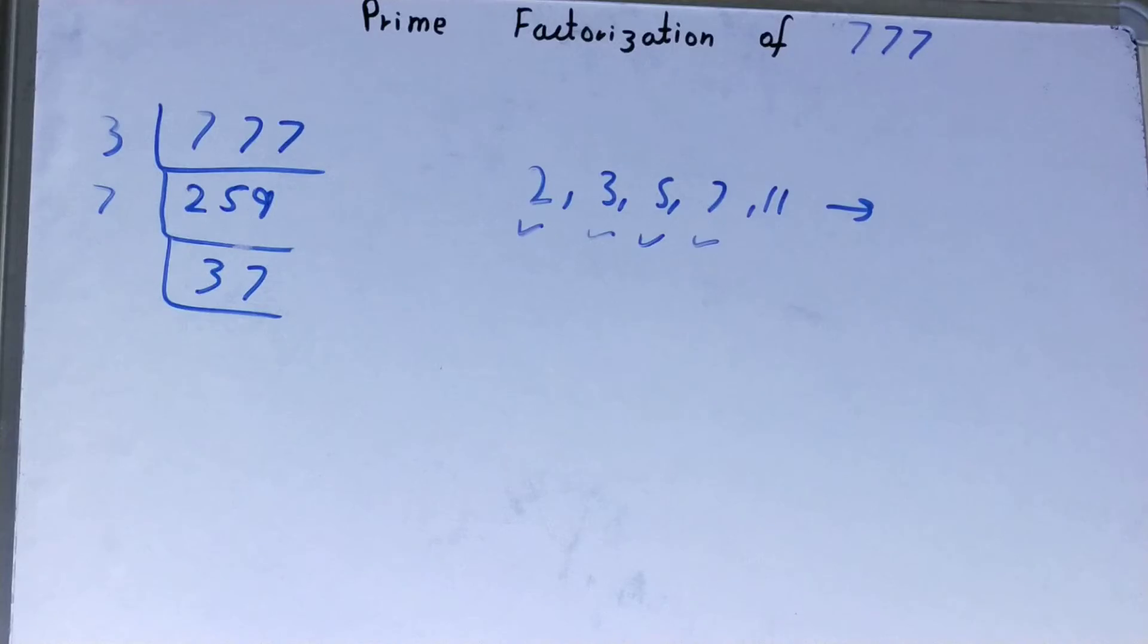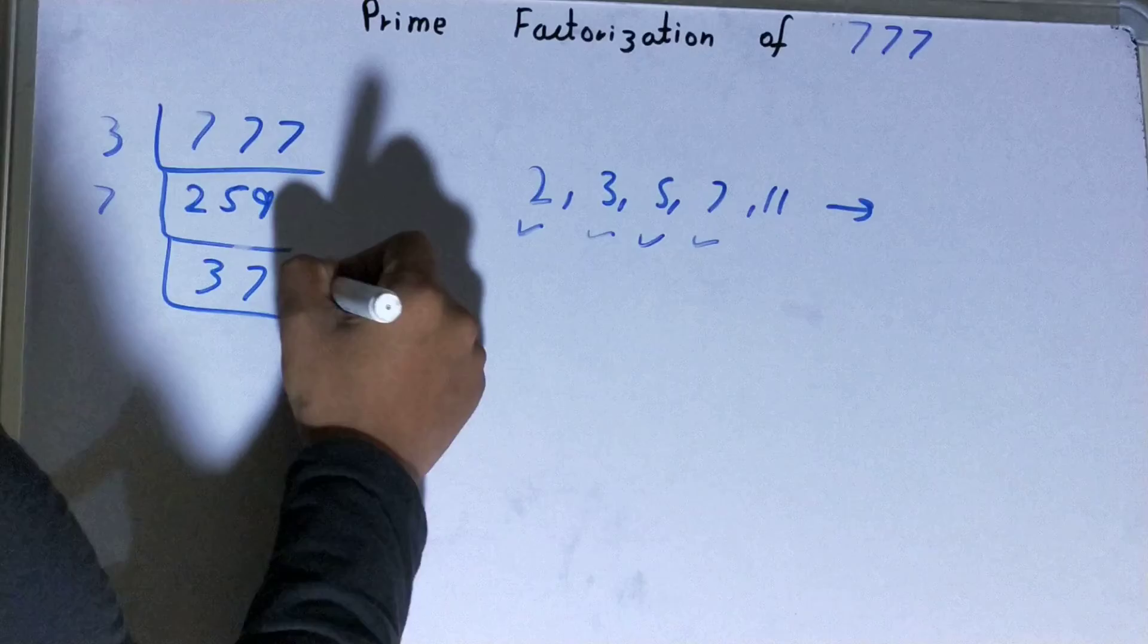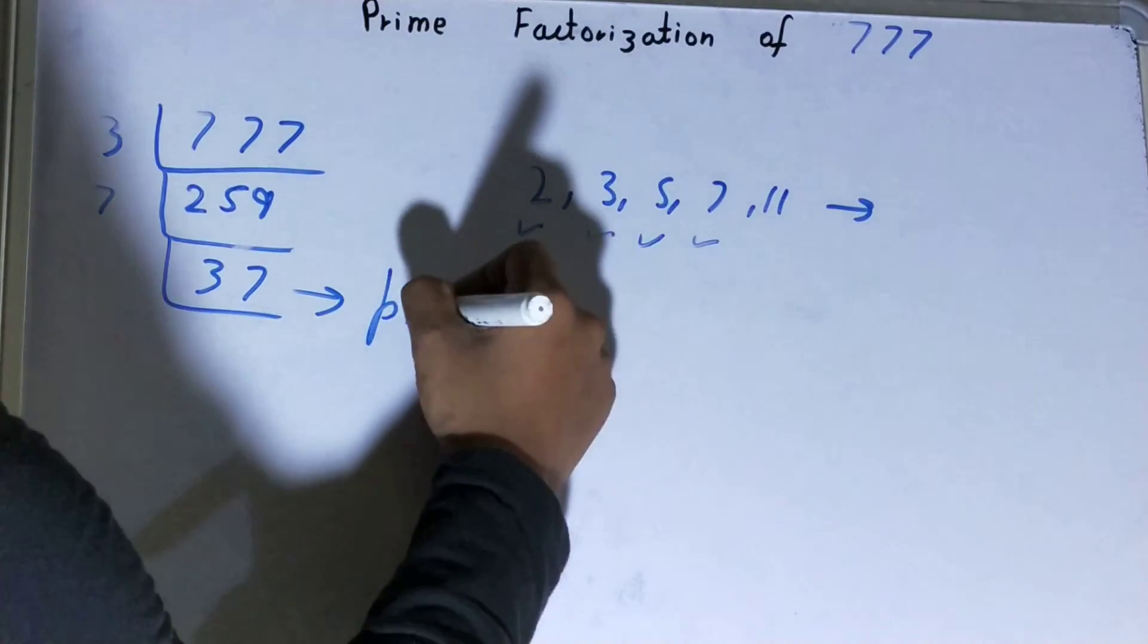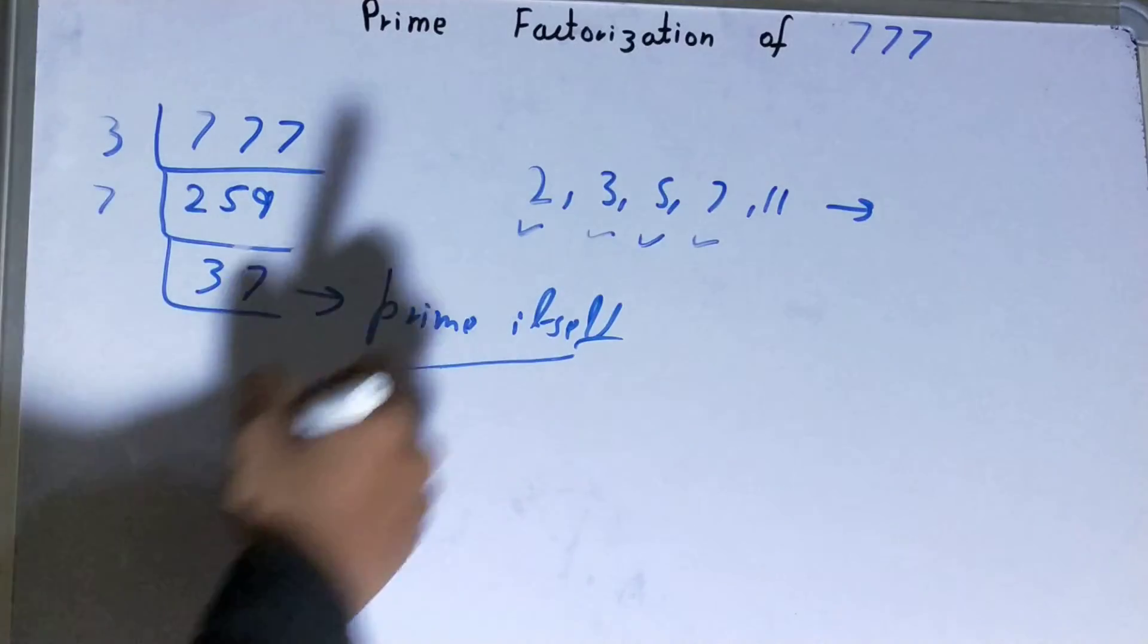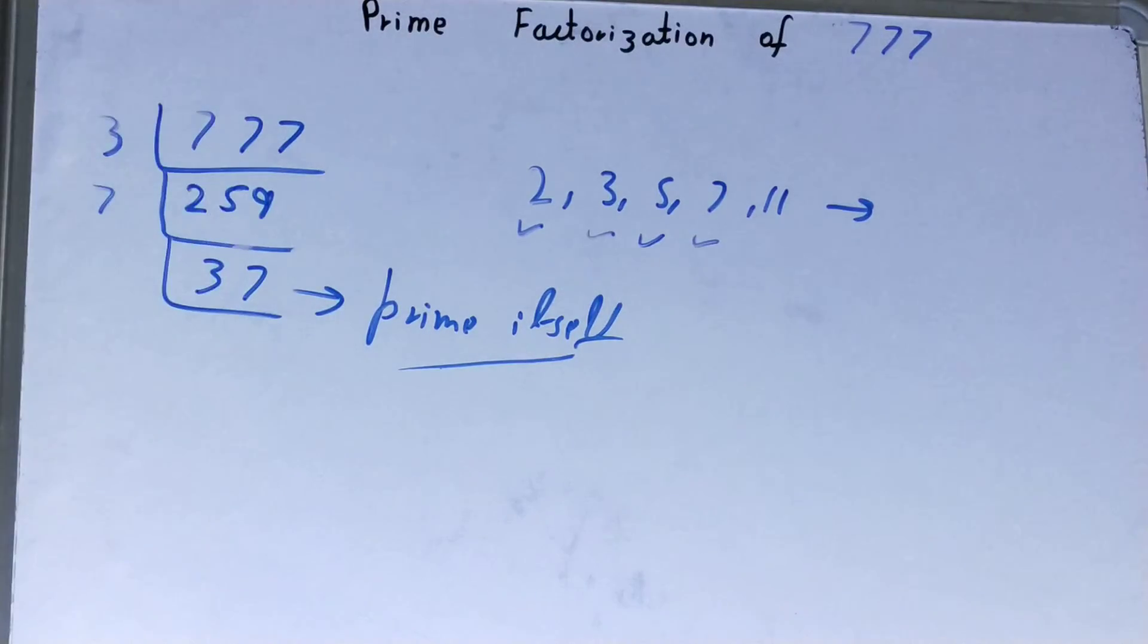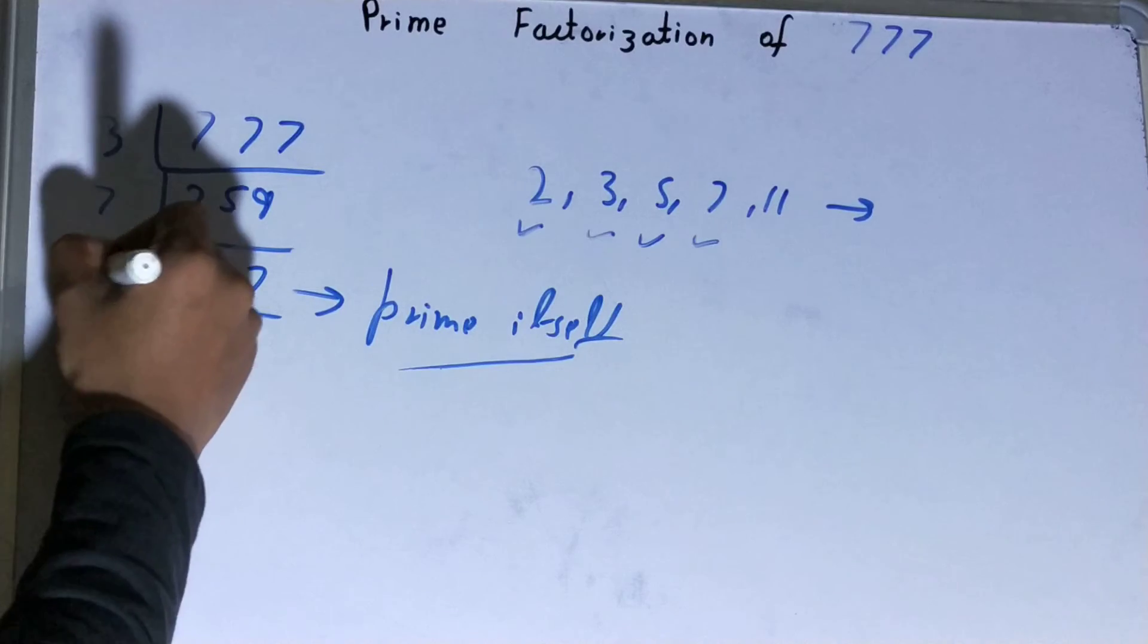If you try it with 11, 13, 17, it won't divide because 37 is a prime number itself. Prime numbers have a specialty that they divide by themselves or 1, so to divide this 37 I need to have 37 itself.